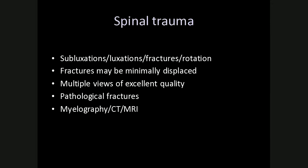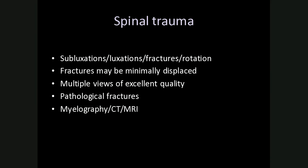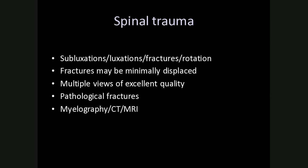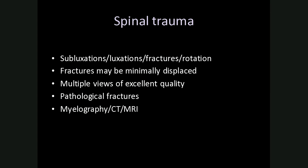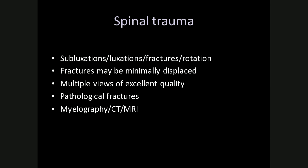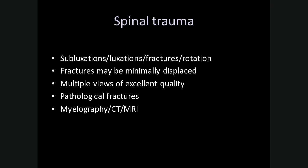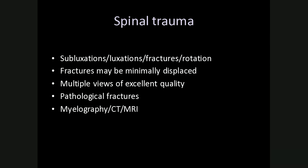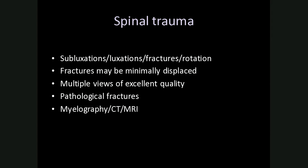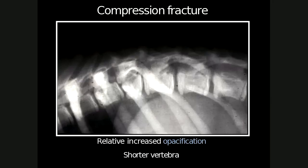Lastly, onto spinal trauma. Just like any other bone, the spine can be affected by subluxations, luxations, fractures, and rotation. Fractures may be minimally displaced and quite subtle, requiring careful attention to technique. Sometimes multiple views are needed. The spine can also be affected by pathological fractures — for example, from a primary bone tumor or metabolic bone disease. In trauma cases where radiographs are negative but the patient has severe clinical signs, one can proceed to advanced imaging — CT and MRI are preferred over myelography in these cases.